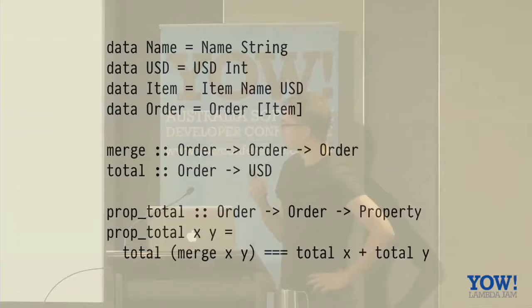So here we've got some data types and we've got some combinators. So we've got a name for an order item and some sort of price line item for the order and an order. And then we want to check this property that when we total up the cost of two orders that that would be the same as merging the orders and totaling up the cost.